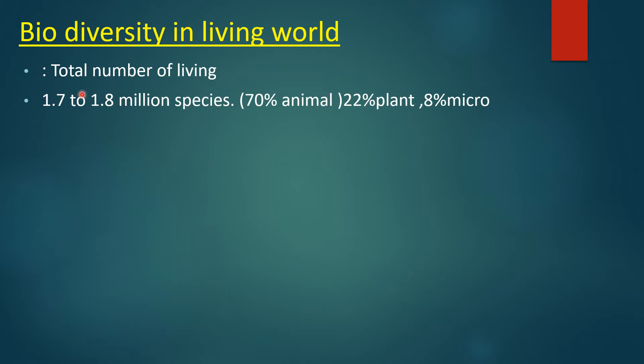Nature में आज भी बहुत से ऐसे animals हैं जिन्हें हम नहीं जान पाए हैं या हम उन्हें search out नहीं कर पाए हैं. According to an estimate, about 1.7 to 1.8 million species have been reported on the earth today. इनमें से 70% animals हैं, 22% plants को include किया गया, और 8% microorganisms को.